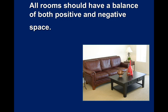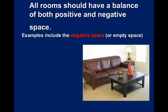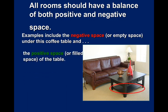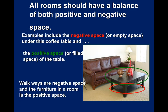If you have too much, it's overwhelming and chaotic. If you don't have enough, then it's lonely. Examples of negative space would be underneath the coffee table — like right in that red circle. The positive space would be anything that's filled, like the stuff on top of the coffee table. So walkways are going to be negative space, and the furniture in a room will be positive space.